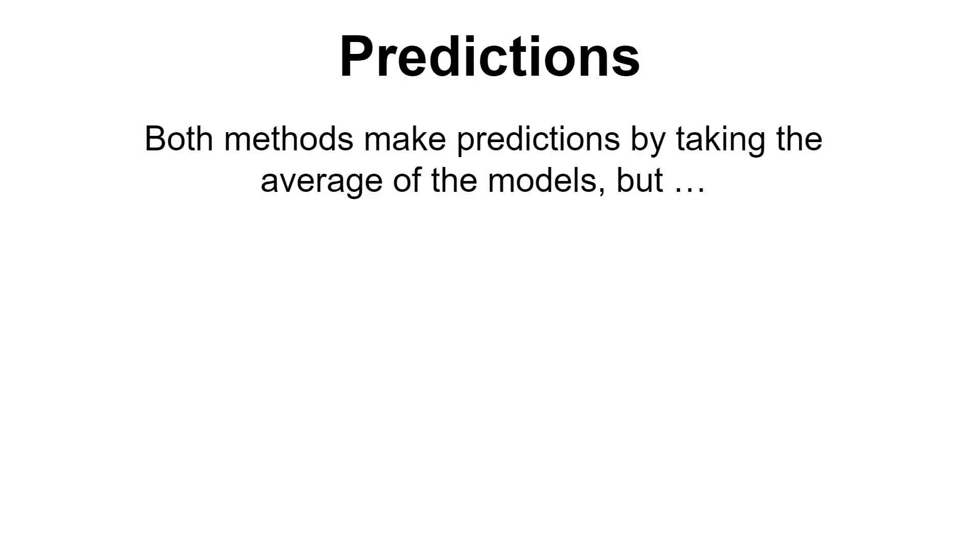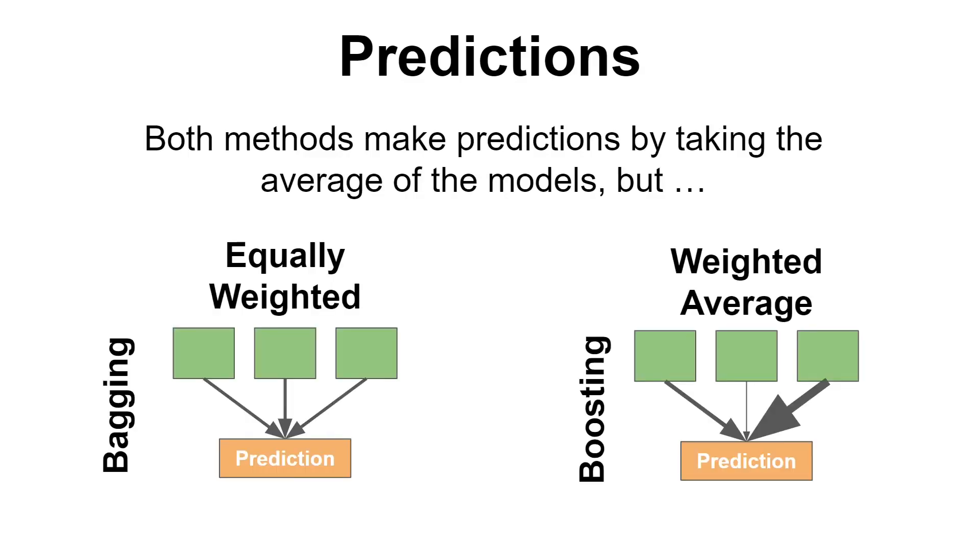How each ensemble makes the predictions is yet another important dimension to analyze. So both methods make predictions by taking the average of the models, but in bagging the classifiers are equally weighted, while in boosting the models are weighted in the ensemble based on their training performance.